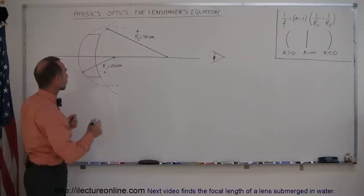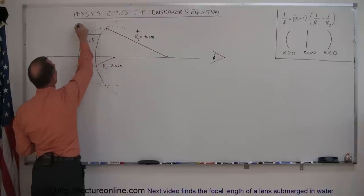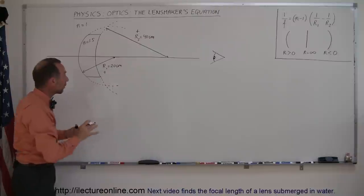Again, n is the index of refraction of the lens, and let's assume that this is equal to 1.5. The lens is immersed in air, so n equals 1 is the index of refraction of the medium around the lens.